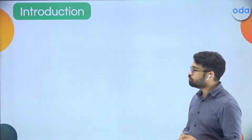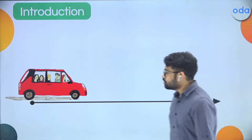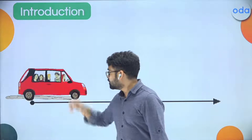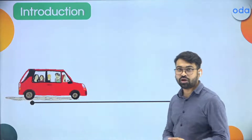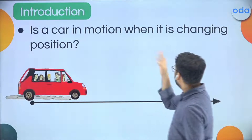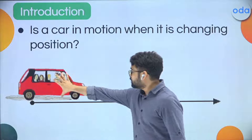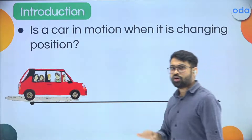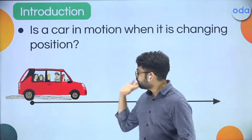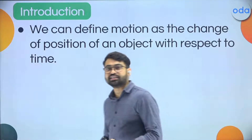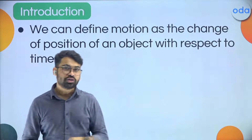The first thing is we are introducing motion to you. So what is being asked? There is this car — it seems to be a moving car, this lady is driving the car, the family are also there and they are probably going on a trip, maybe on a picnic. The question is: is a car in motion when it is changing position? If this car happens to be here, then here, then here — you can say this car is moving towards the right.